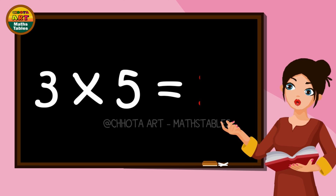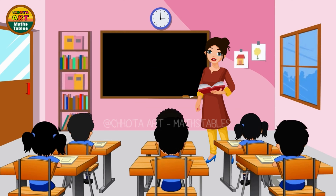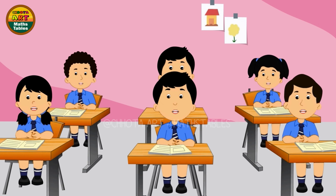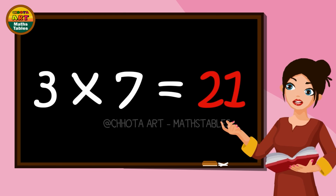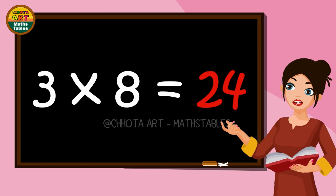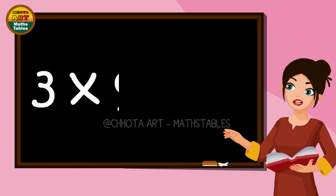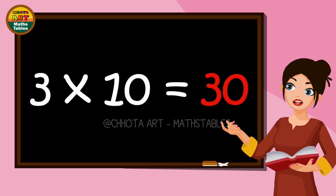Three fives are fifteen. Three sixes are eighteen. Three sevens are twenty-one. Three eights are twenty-four. Three nines are twenty-seven. Three tens are thirty.